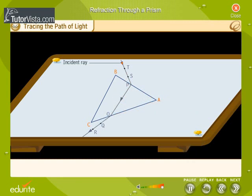TP represents the incident ray. PO represents the refracted ray. And OR represents the emergent ray which is bent towards the base.